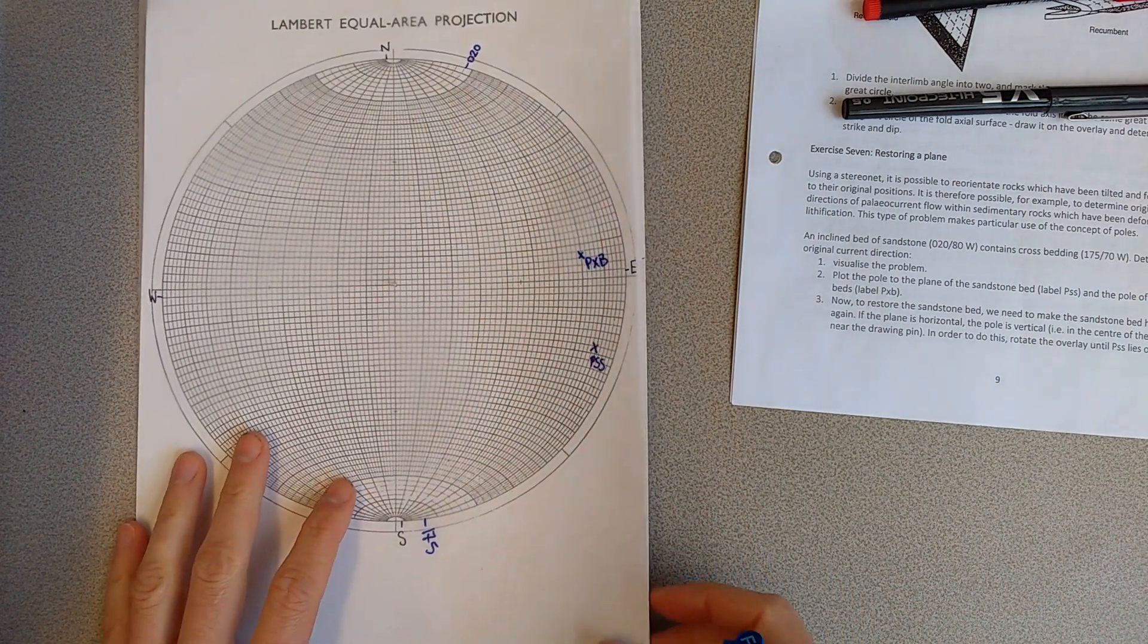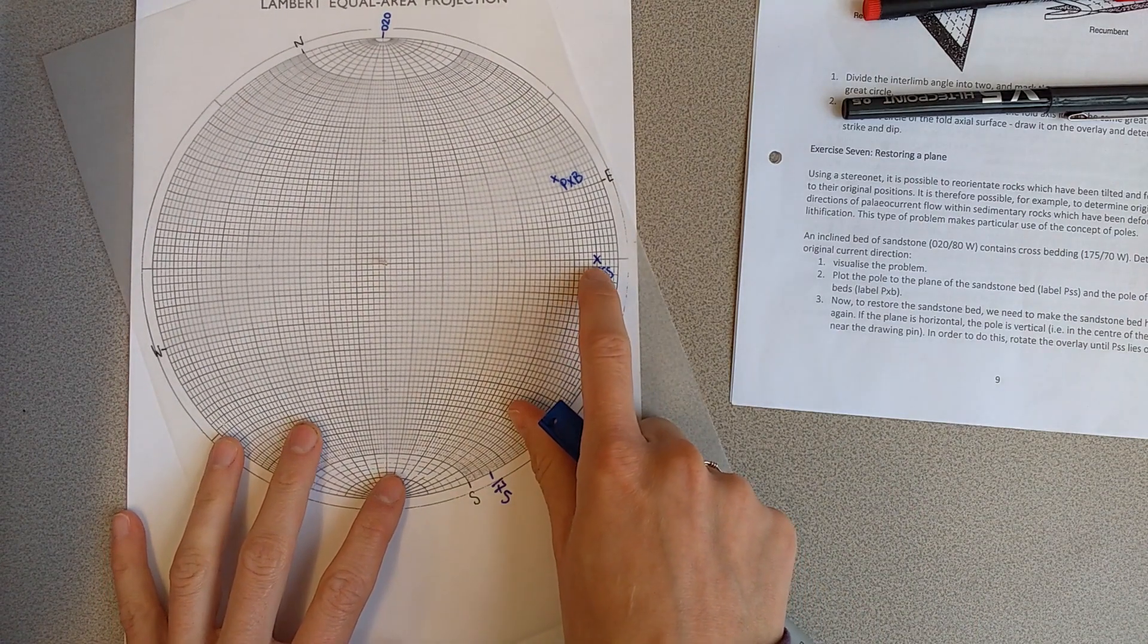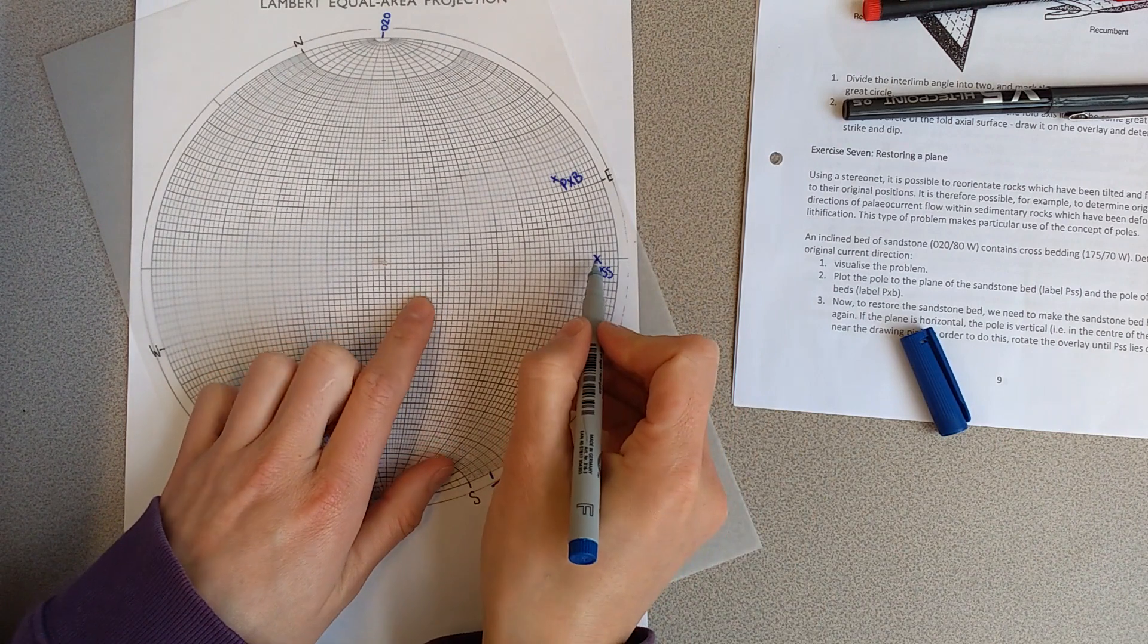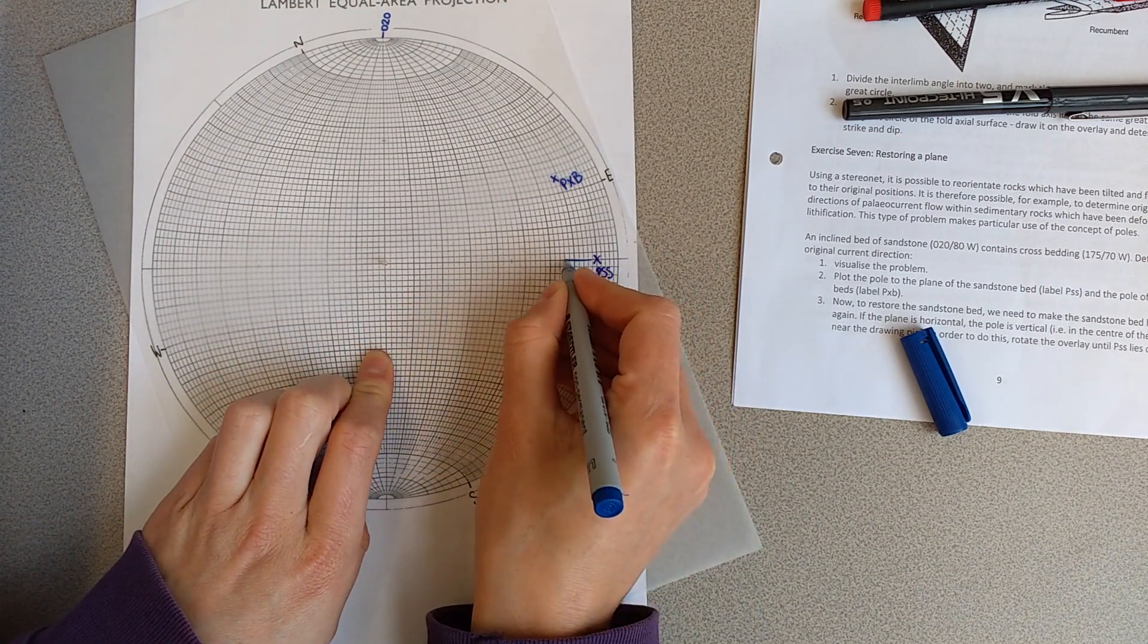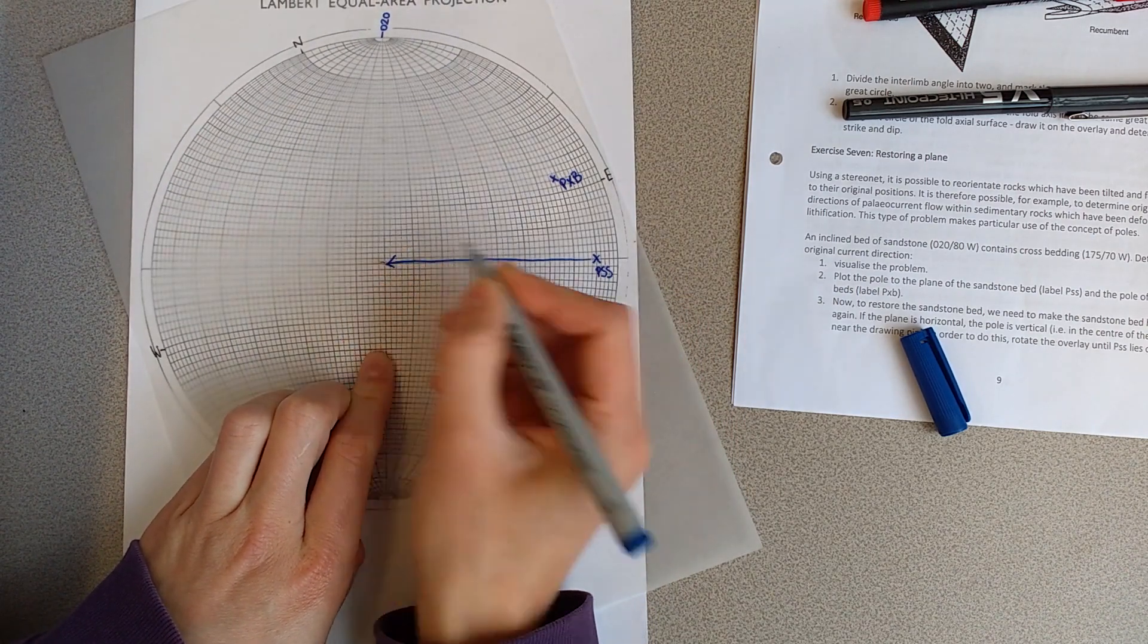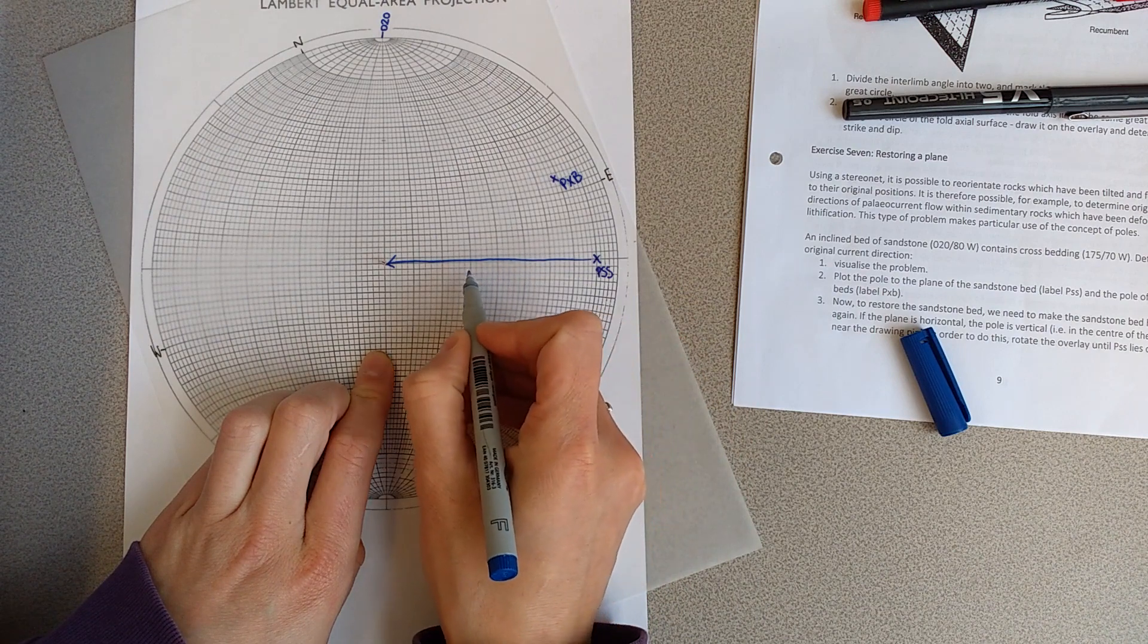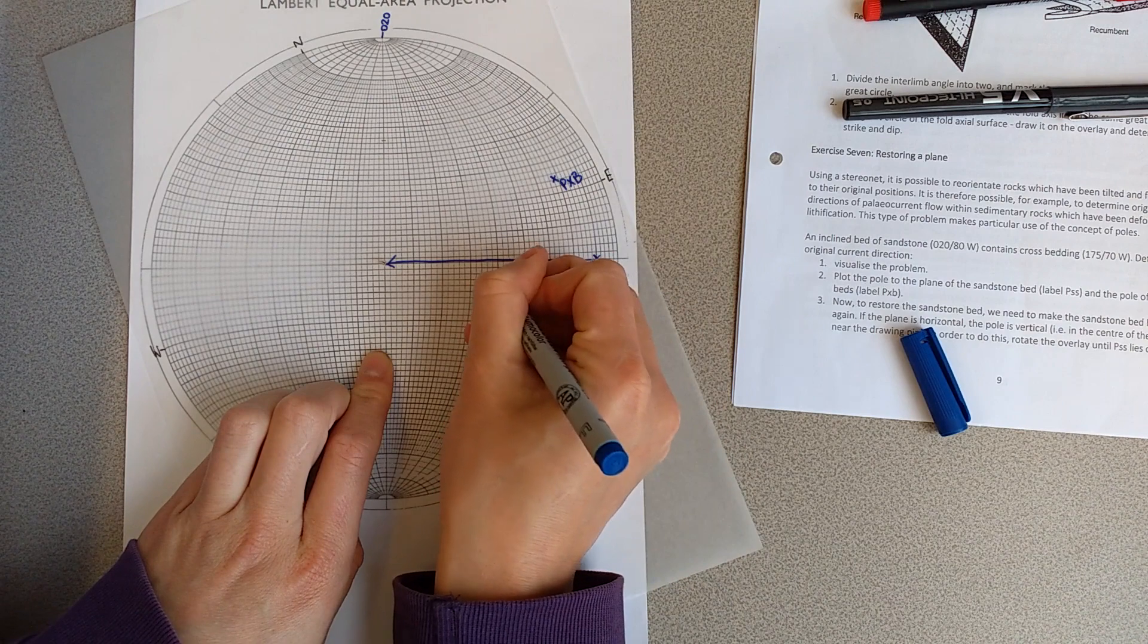In order to do that we're going to rotate this until our bedding lies on the east west line. Then we're going to move the bedding so this pole is going towards the center, because if the pole is vertical then the plane is going to be horizontal. That is moved at 10, 20, 30, 40, 50, 60, 70, 80 degrees.